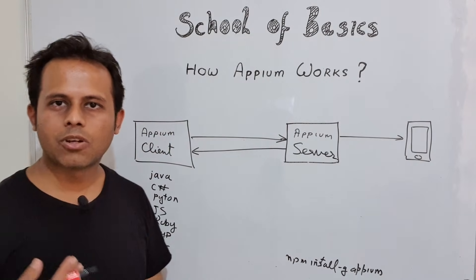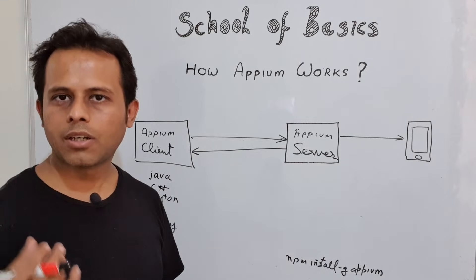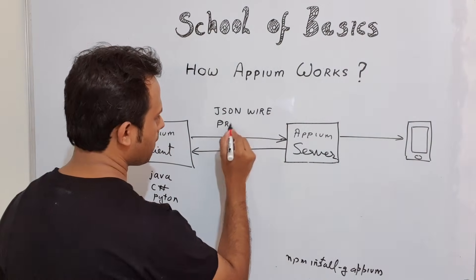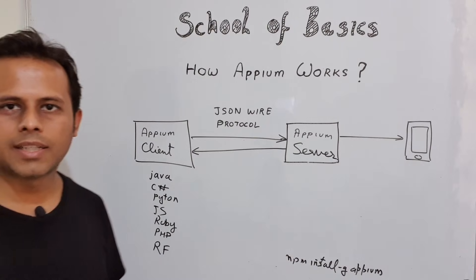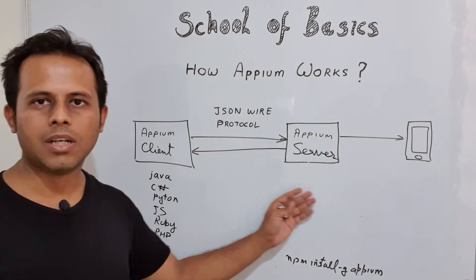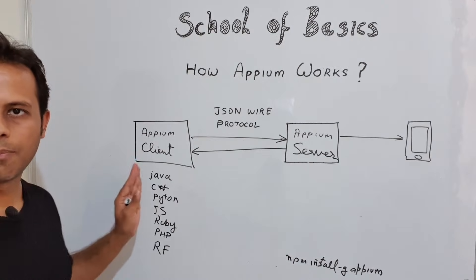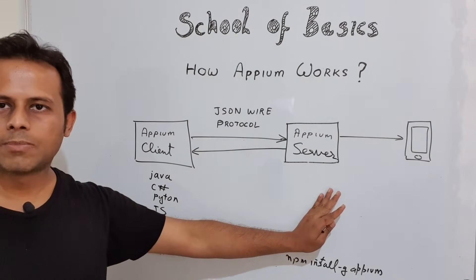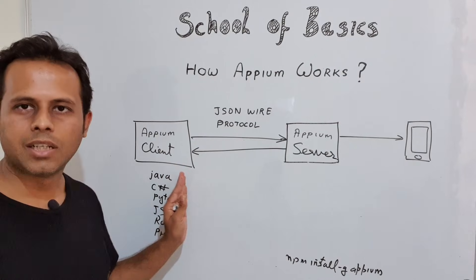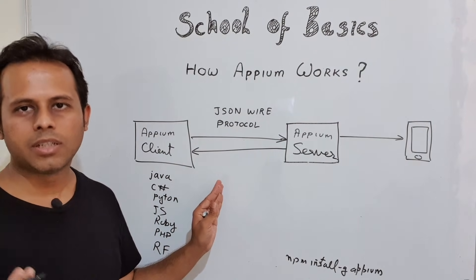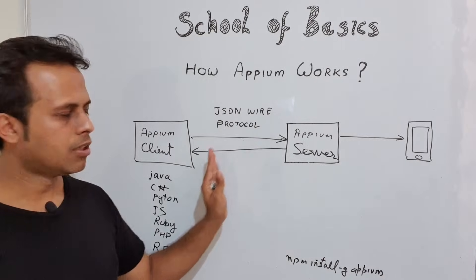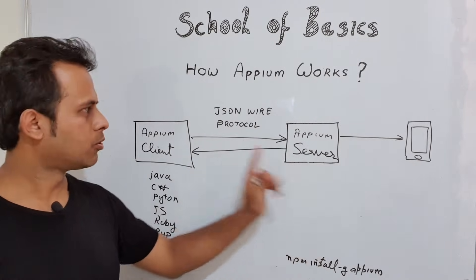There are three very important components in the design of Appium. The first is JSON Wire Protocol. This is a protocol that converts the client request into a format that can be understood by the Appium server. The client request sent in any programming language cannot be understood by the Appium server as-is — it needs to be converted. JSON Wire Protocol converts these requests into HTTP RESTful requests, which is what the Appium server understands.